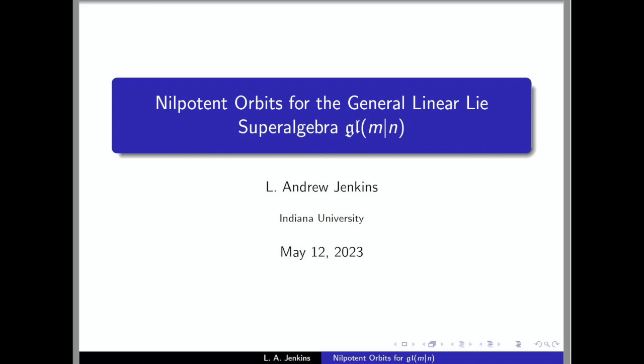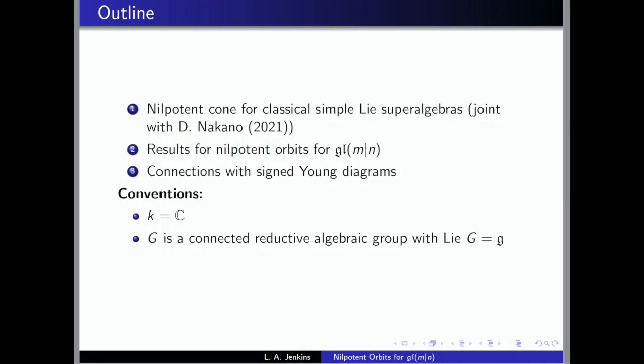Thank you, and thanks to the organizers for giving me the opportunity to talk today. I'll be speaking on some results on nilpotent orbits for GLMN. The outline of the talk has a couple of sections. The first is joint work with Dan and Cano on the nilpotent cone for classical simple Lie superalgebras. I'll be brief there, because I mostly want to focus on GLMN and give some results on nilpotent orbits in that case. There are also some connections with signed Young diagrams I wanted to mention, which should bring some combinatorics flavor into the talk.